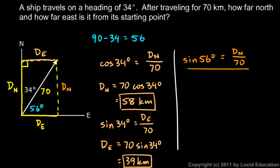So sine of 56 degrees will be DN over 70. So rearranging that equation algebraically gives me that DN is equal to 70 times the sine of 56 degrees. And if I work that out, I get 58 kilometers. Okay, a different angle here than I was using over here. But I'm also using the sine instead of the cosine. And the answer ends up being the same.